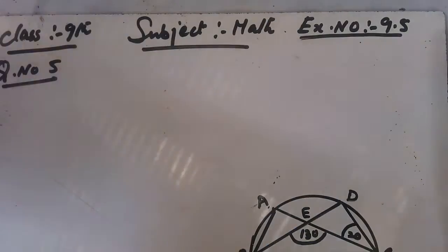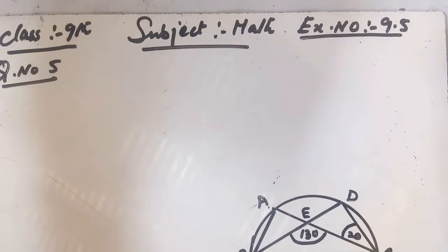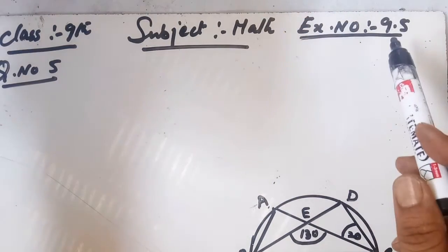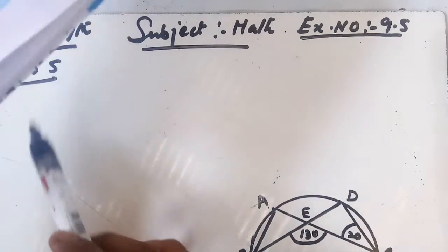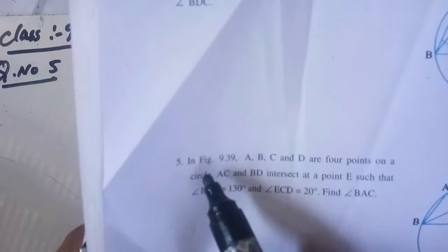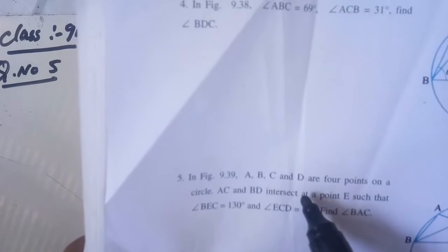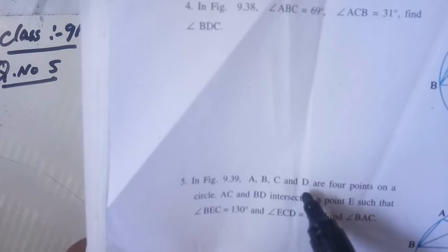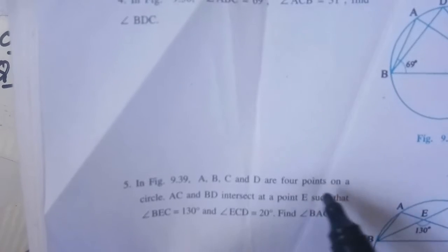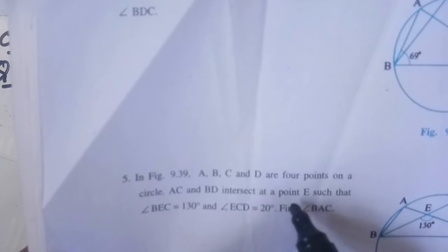This is Exercise 9.5, Question Number 5. In Figure 9.39, A, B, C, and D are four points on a circle. The chords AC and BD intersect at a point E.